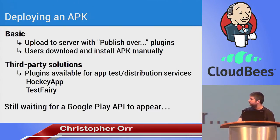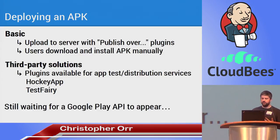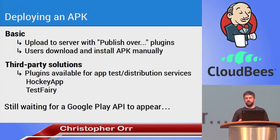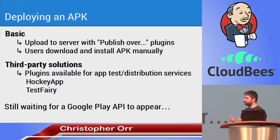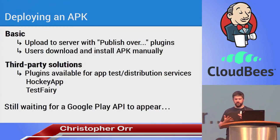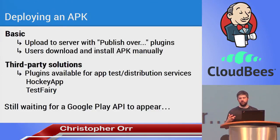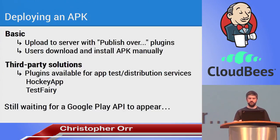Hopefully at some point there might be a Google Play API for this. Google Play also provides an alpha and beta testing service, however it's not really scriptable — there's no official API for it. It's also very slow: if you upload an app and say you want it released to beta testers, you've got to wait about two hours before it's actually live, whereas with HockeyApp it's instant. Maybe something else will come out of Google I/O. We'll see.